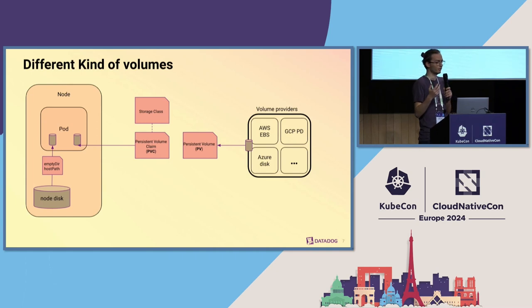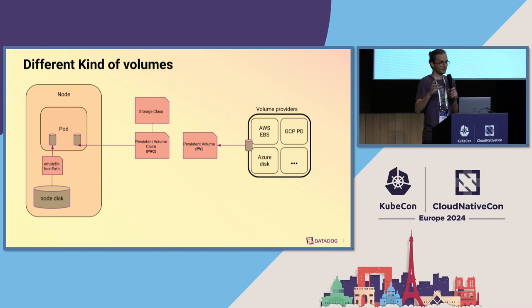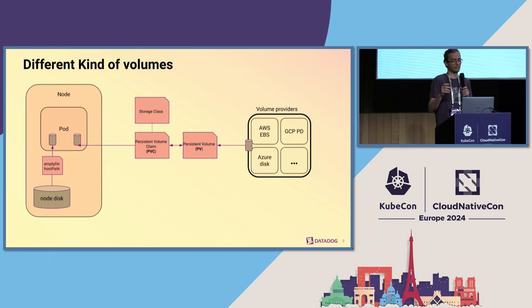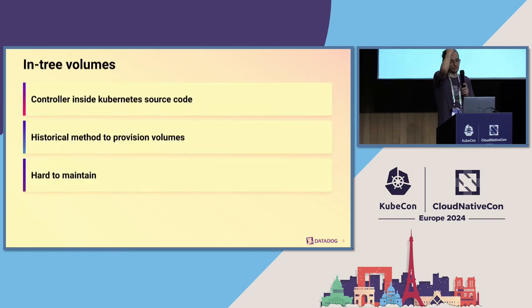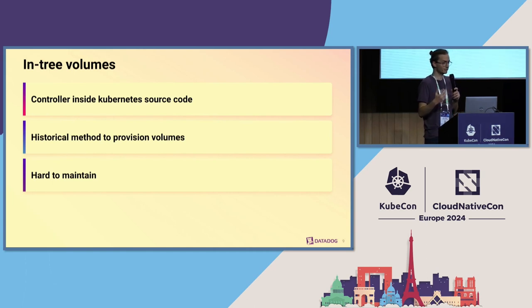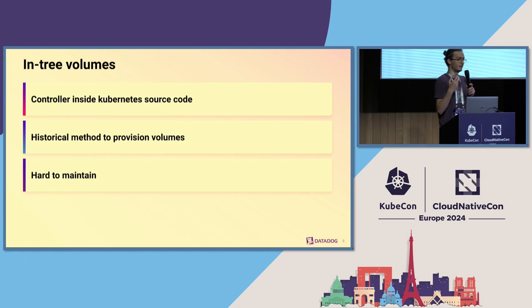For instance, the pod can ask for GP3 volumes in AWS EBS and the cluster will try to satisfy this claim using a Persistent Volume, which is how Kubernetes represents the backing disk used by a pod. It can use multiple kinds of volume providers like AWS EBS or GCP Persistent Disks. Once we have a PV and a PVC they get bound together and the pod can access the underlying data. Initially in Kubernetes, the way to get persistent volumes was through in-tree volumes — named because the code responsible for creating those volumes was part of the Kubernetes source code itself.